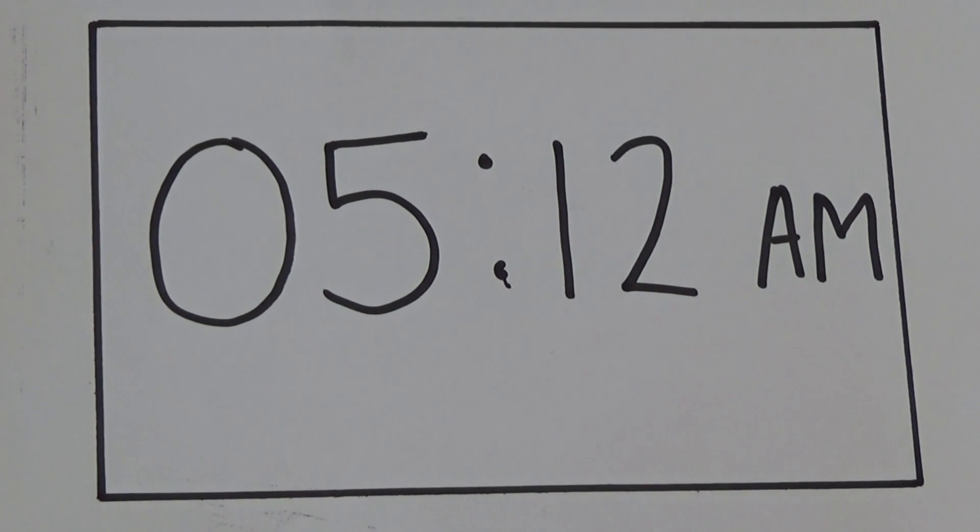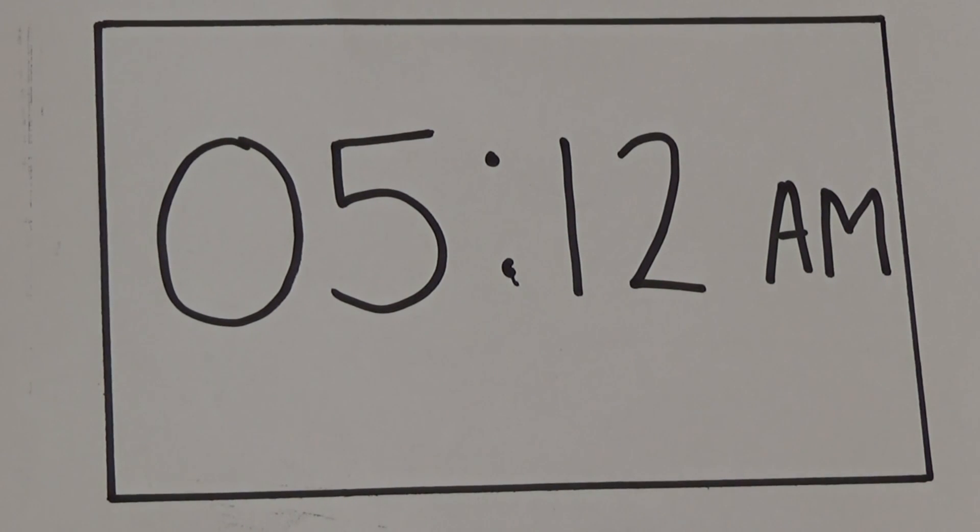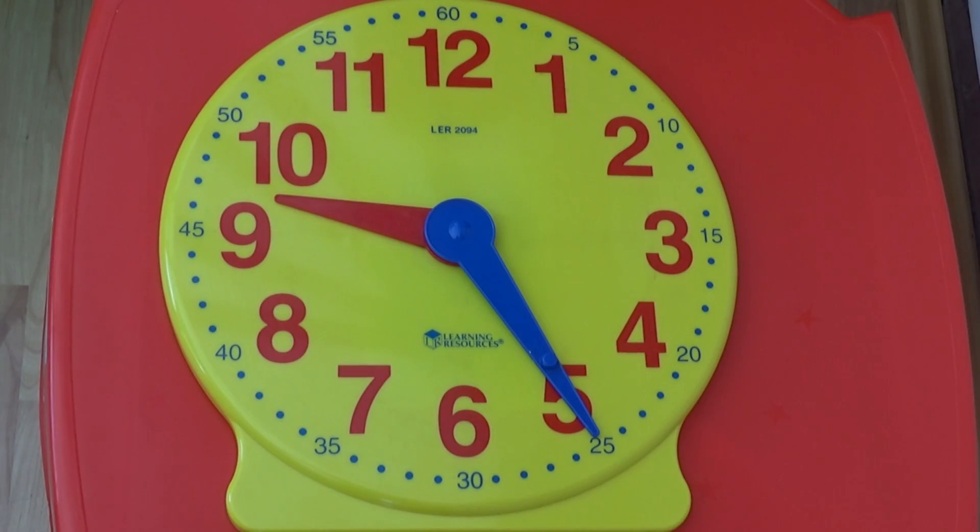When the hours are only one digit we put a zero in first, so the hours and minutes both have two digits each. As the hour is 5 I have written 05 for the hours and the minutes are 12 minutes past I have written 12 for the minutes. The time being shown in digital here is 5:12 AM which means it is 5:12 in the morning.